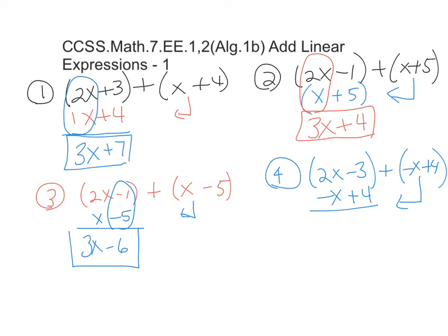Okay. And in this case here, when we're looking at it, we have 2x minus 1x, which would be a positive x. And then we're adding these two together. And they're different signs.